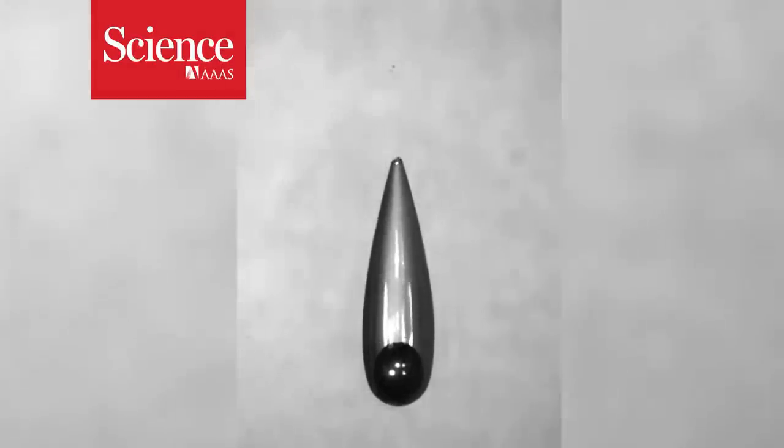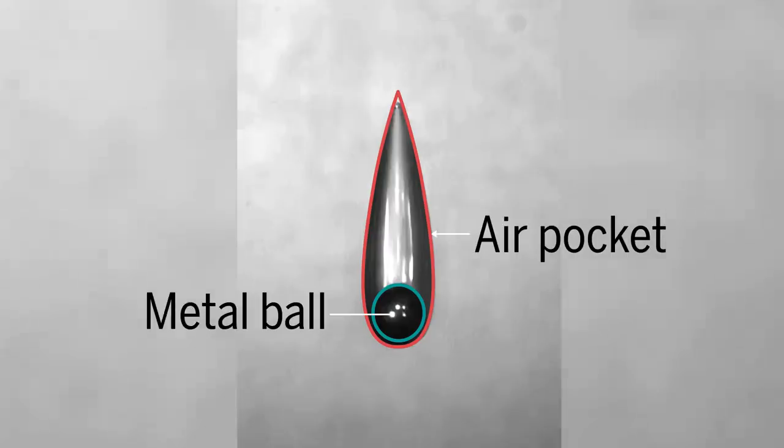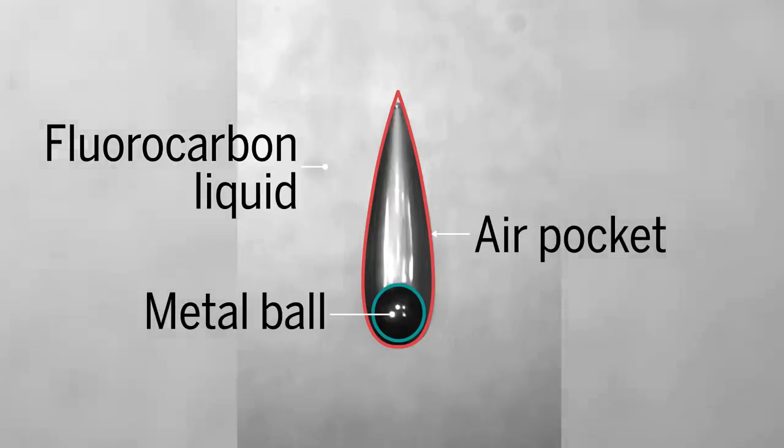What looks like an alien spaceship is actually a tiny object made up of an air pocket surrounding a metal ball, plunging through liquid. The air pocket creates a nearly frictionless surface and is falling at a constant velocity.